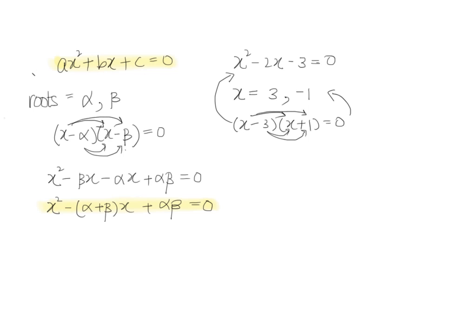Let me use another color. Now let's say we were to bring it down here and we were to rewrite this equation such that we make sure the x squared is one x squared. Now divide throughout by a. We'll end up with x squared plus b over a x plus c over a equals to zero.